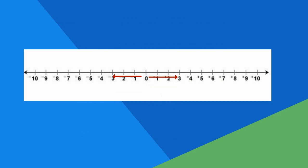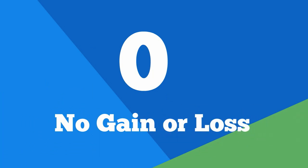Let's look at another example. What integer represents a gain of 35 yards? 35. What is the opposite of a gain of 35 yards? A loss of 35 yards, minus 35. What does zero represent in this situation? You didn't gain or lose yards.